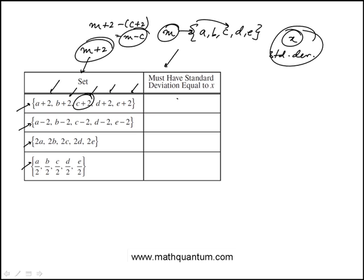The standard deviation actually doesn't change. If you subtract the same number from all of them, it's also the same. However, if you double the numbers, the deviations will double, and the standard deviation would actually be 2X.